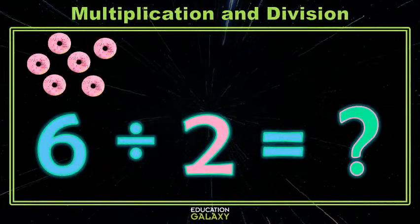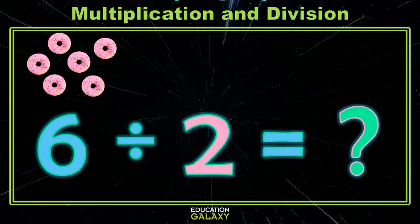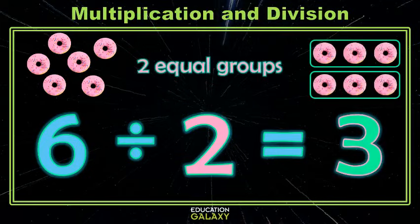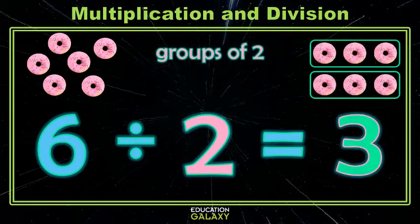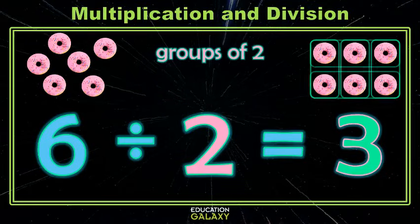Remember when you'd have a group of objects? Here we have six donuts, and you'd be asked to split them into two equal groups. You'd say, hey, I can have two equal groups of three. Or you'd be asked to split them into groups of two, and you'd say, hey, now I have three groups of two.